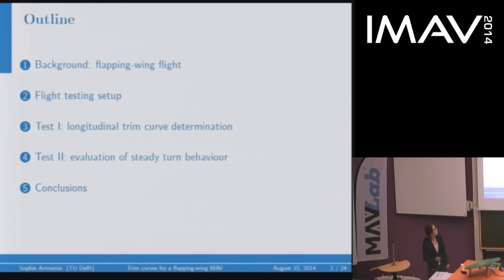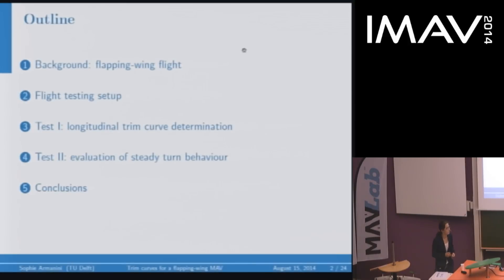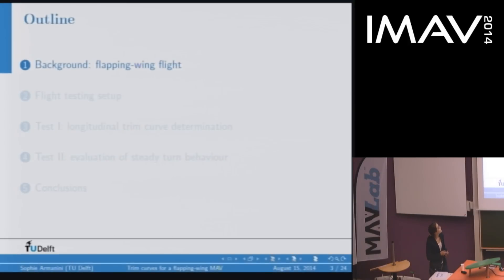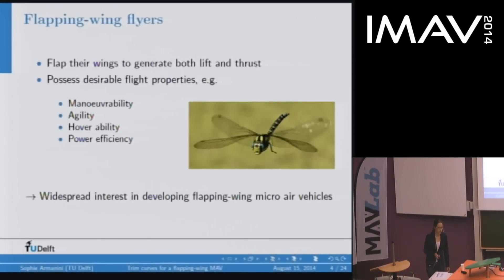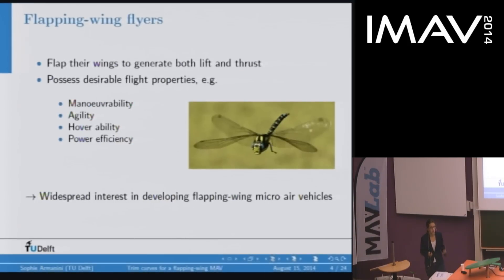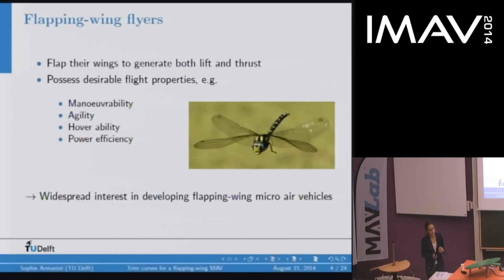This is the basic outline I'll follow. I'll start with a very quick introduction to flapping wing flight and then say something about the experimental setup we used and the tests we conducted. Flapping wing flyers flap their wings to generate lift and thrust. Due to this particular mechanism, they possess a number of desirable flight properties — they tend to be highly maneuverable and agile. They can typically hover and fly at very low speeds.